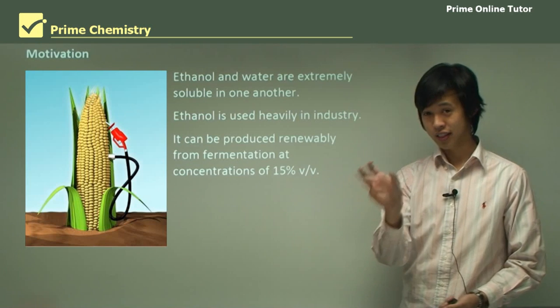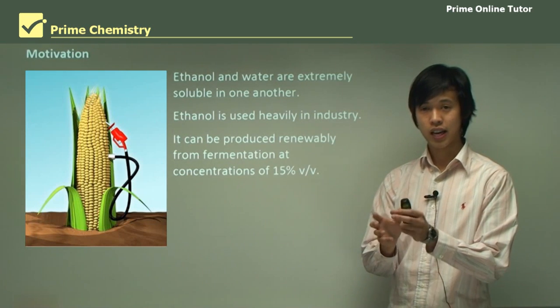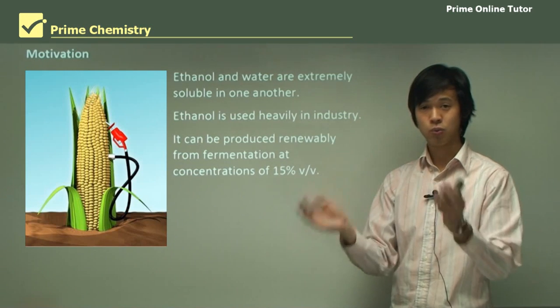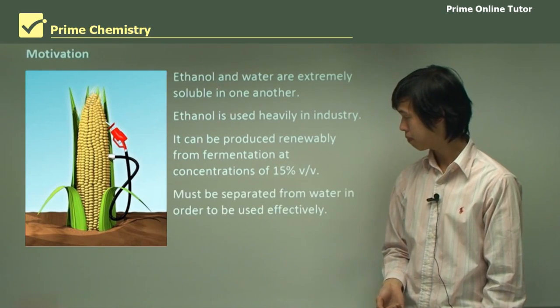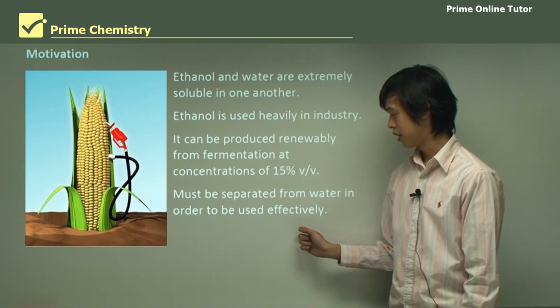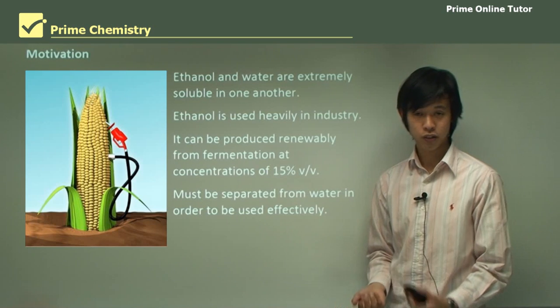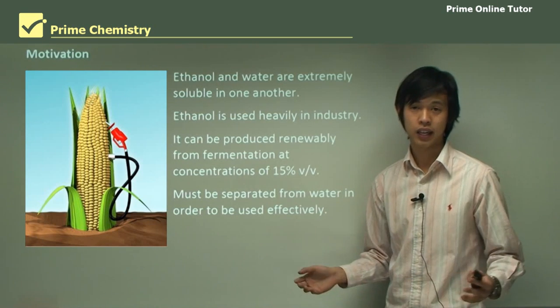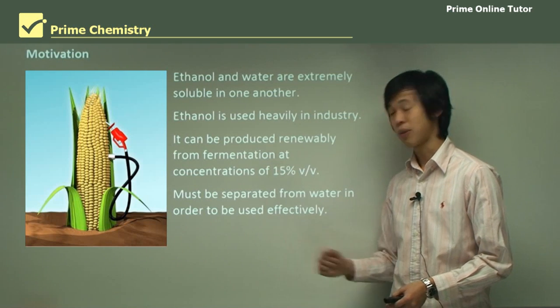So the remaining 85% will be water mostly and some other small parts like yeast and things like that. That in itself tells us what we need to do. We have 15% ethanol and we have the rest water. So we want to separate it so we can get that pure ethanol. In order to use it effectively, in order to mix it with our petrol, we need to get completely no water, just anhydrous ethanol.